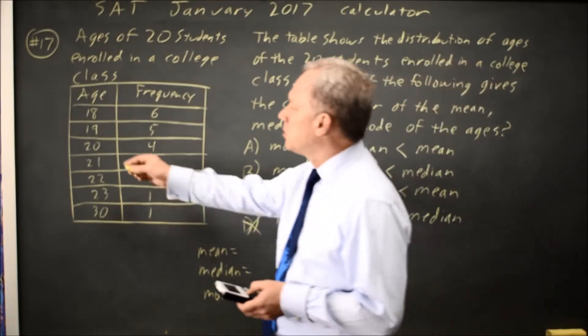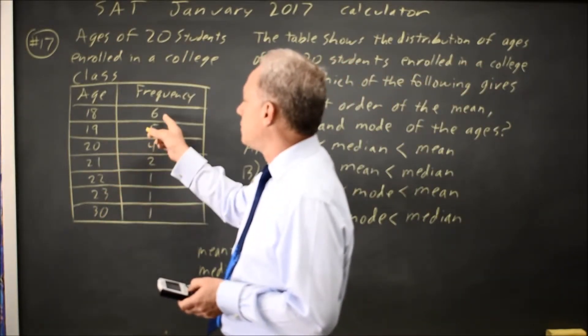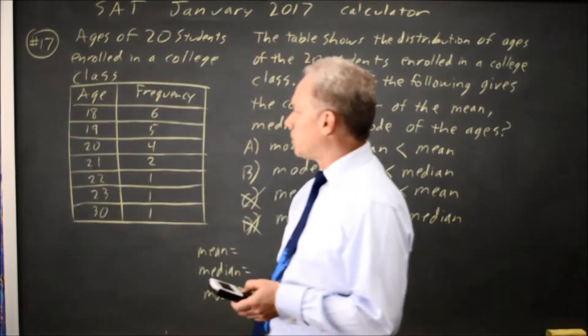So I put 18, 19, 20, 21, 22, 23, 30 in list 1, and 6, 5, 4, 2, 1, 1, 1 in list 2.